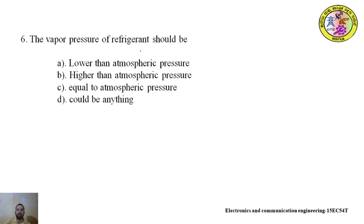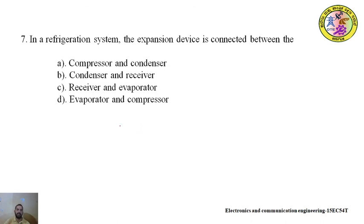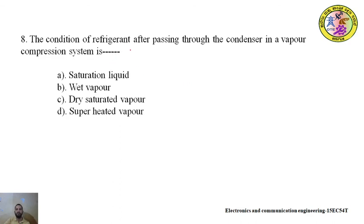Sixth question: the vapour pressure of refrigerant should be — lower than atmospheric pressure, higher than atmospheric pressure, equal to atmospheric pressure, or could be anything. Answer: higher than atmospheric pressure — then only it can absorb heat. Seventh question: in a refrigeration system, the expansion device is connected between — compressor and condenser, condenser and receiver, receiver and evaporator, or evaporator and compressor. Answer: receiver and evaporator. Eighth question: the condition of refrigerant after passing through the condenser in a vapour compression system is — saturated liquid, wet vapour, dry saturated vapour, or superheated vapour. Answer: saturated liquid.